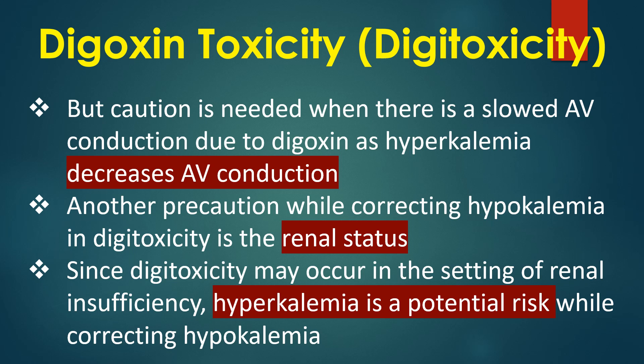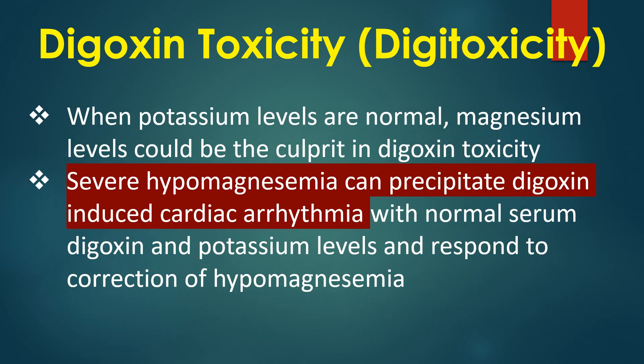Caution is needed when there is slowed AV conduction due to digoxin, as hyperkalemia decreases AV conduction further. Another precaution while correcting hypokalemia in digitalis toxicity is the renal status; since toxicity may occur in the setting of renal insufficiency, hyperkalemia is a potential risk. When potassium levels are normal, magnesium levels could be the culprit. Severe hypomagnesemia can precipitate digoxin-induced cardiac arrhythmia with normal serum digoxin and potassium levels, responding to correction of hypomagnesemia.